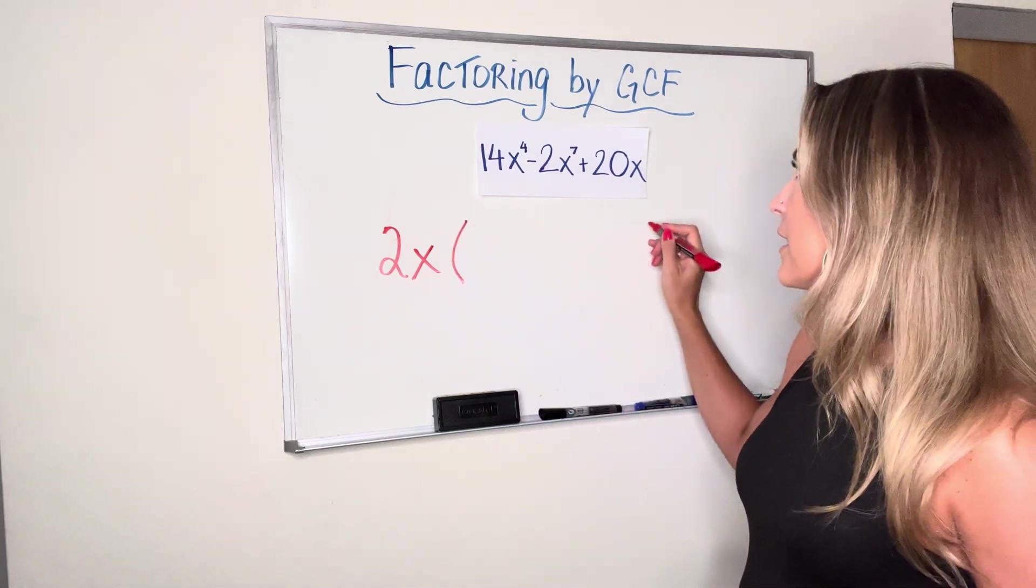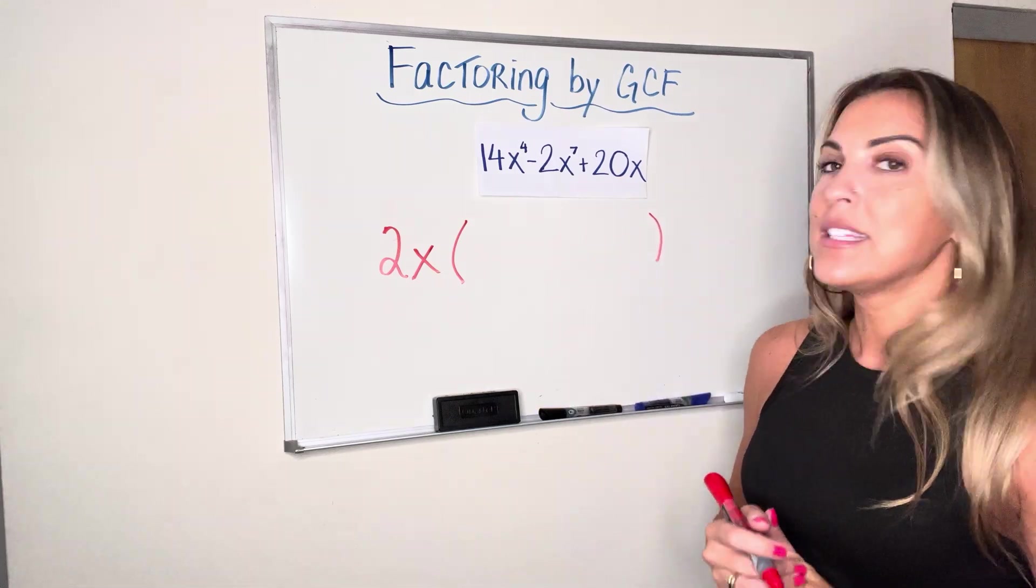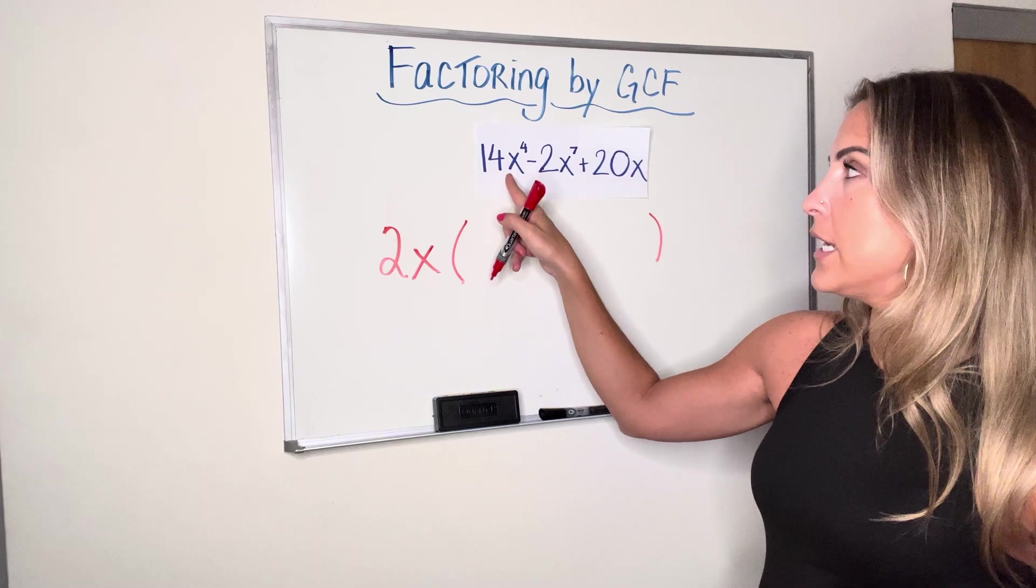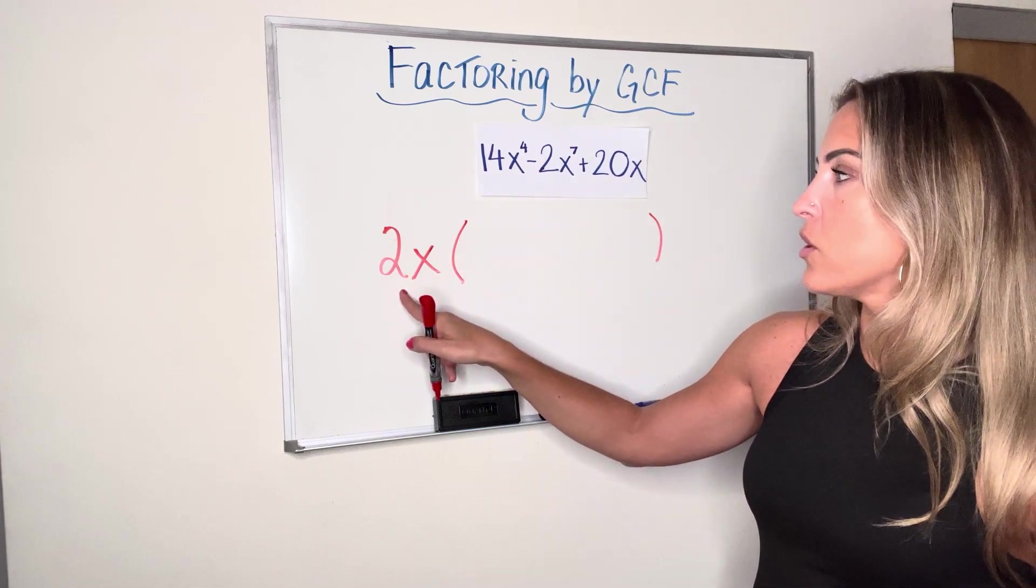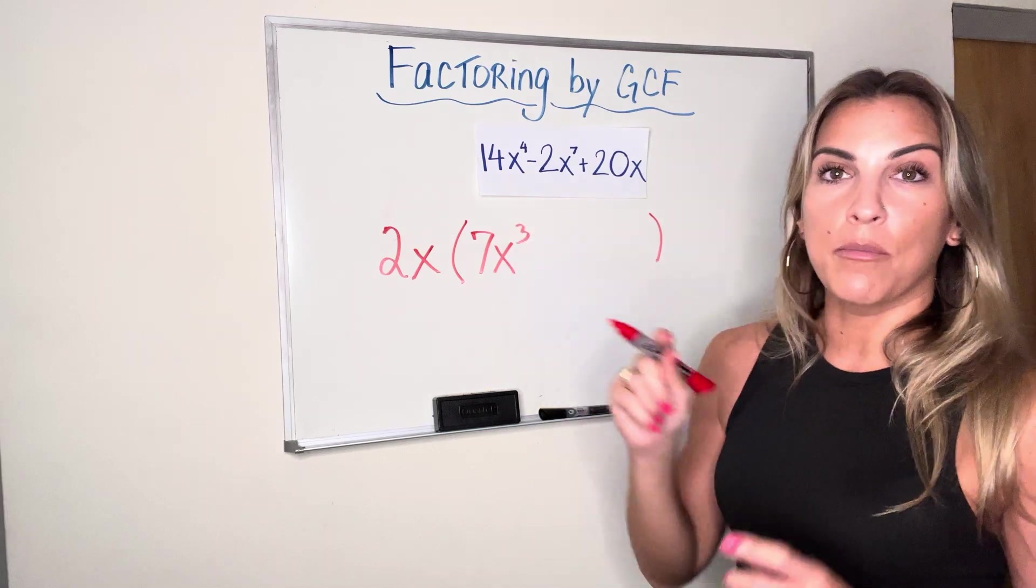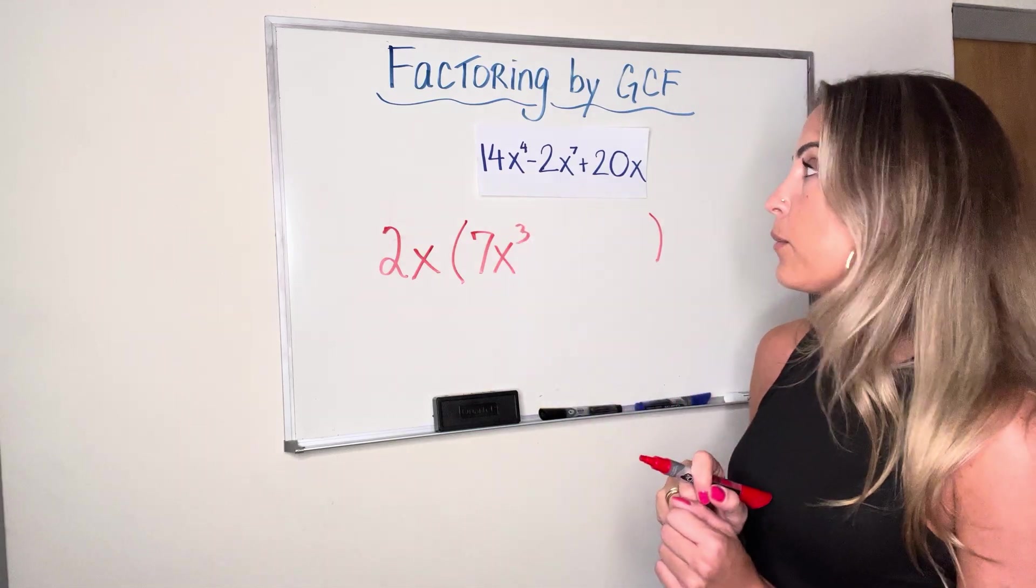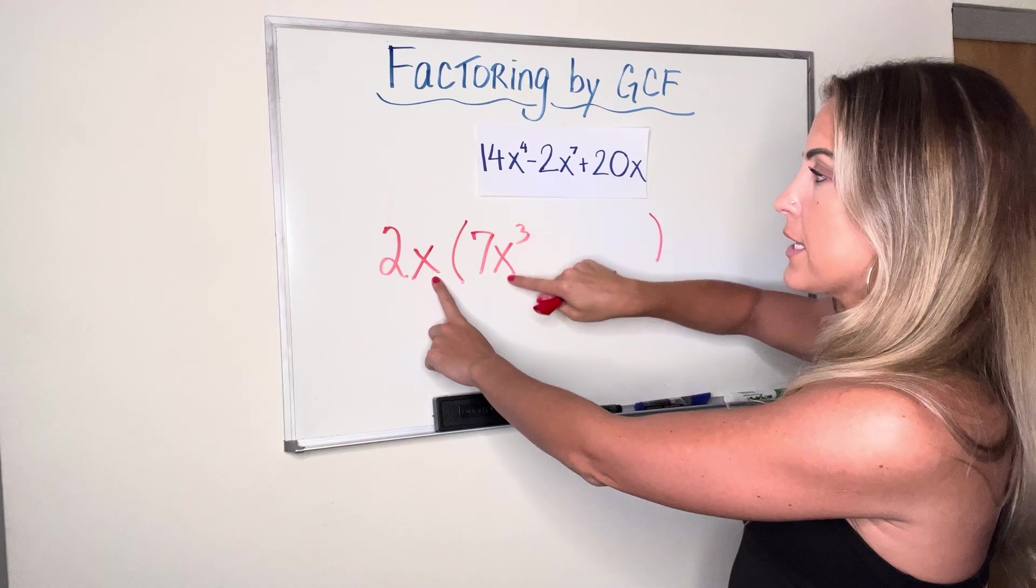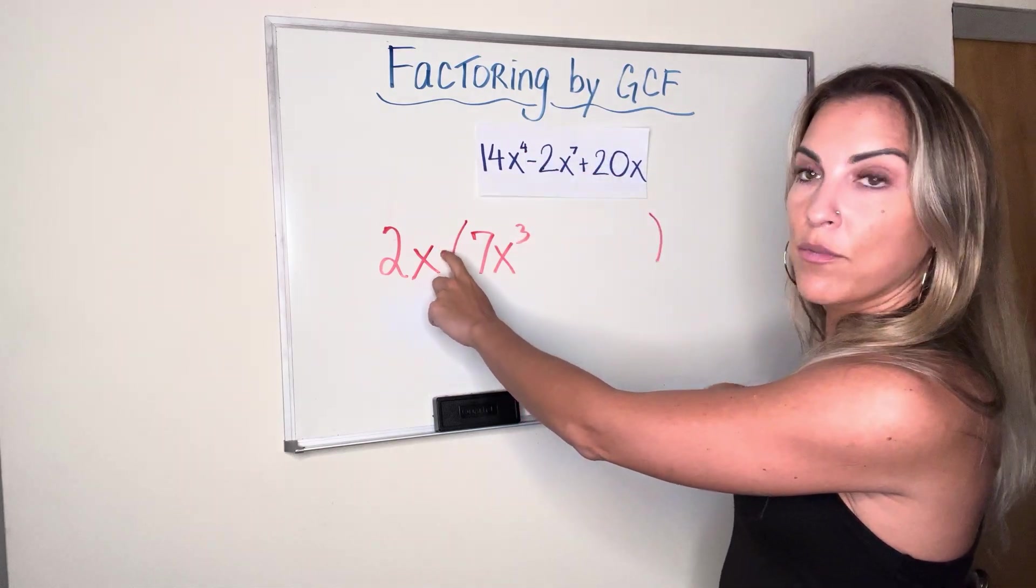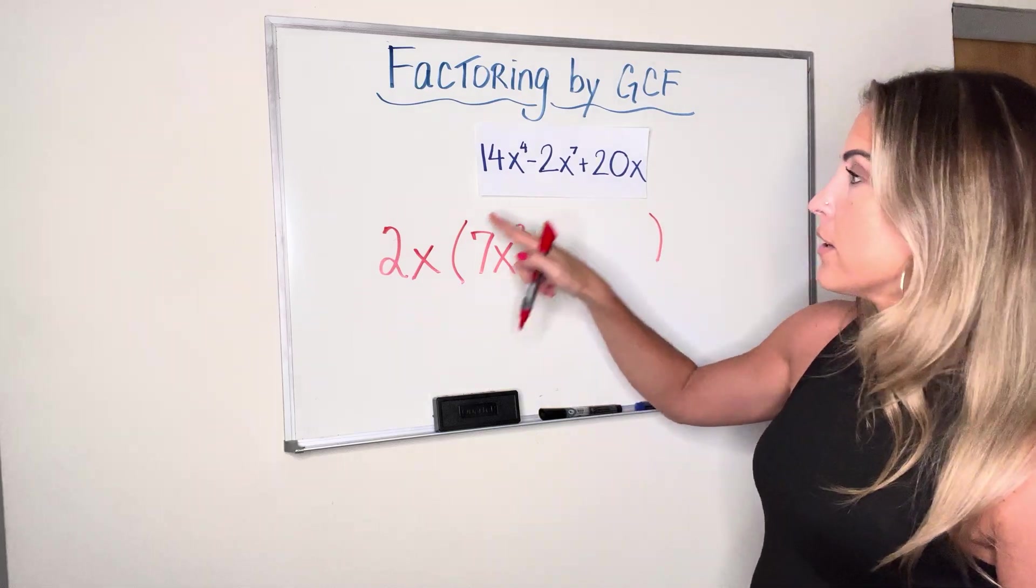Again, following that same last step, divide each term by the GCF. So 14x to the fourth divided by 2x is going to give me 7x to the third. One more time, those division rules for dividing with the same base. Same base, keep the base, subtract the exponents. It's 4 minus invisible 1 is 3.